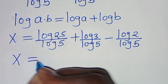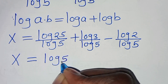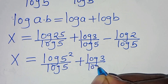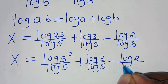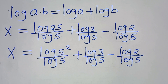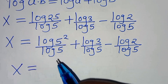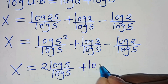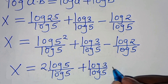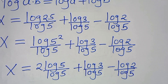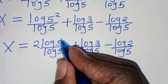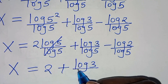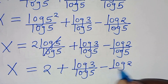We can express log25 as log(5²), and applying the power property gives us 2·log5. So log(5²) divided by log5 simplifies to 2. Therefore x equals 2 plus log3 over log5, minus log2 over log5.